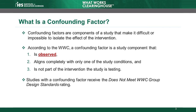The WWC is concerned about confounding factors because they prevent us from isolating the effect of an intervention. Confounding factors make it impossible to know whether the intervention alone is responsible for the observed effect, or the confounding factor is responsible for some or all of the effect. Because of this challenge, any study with a confounding factor will receive a rating of Does Not Meet WWC Group Design Standards.